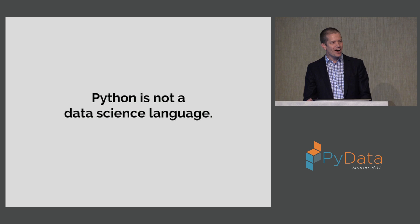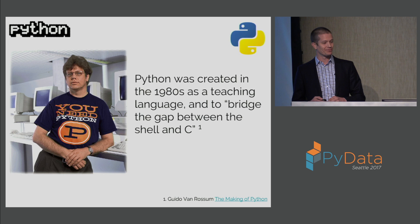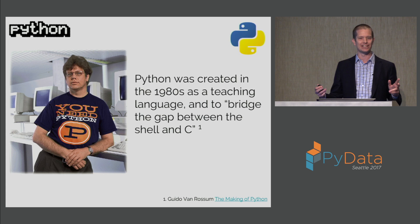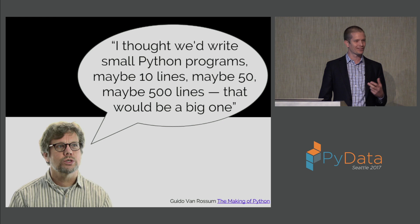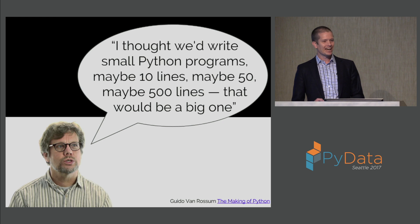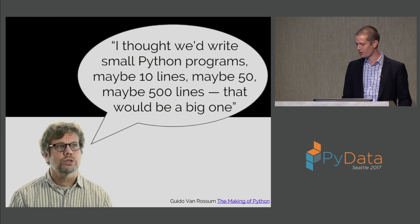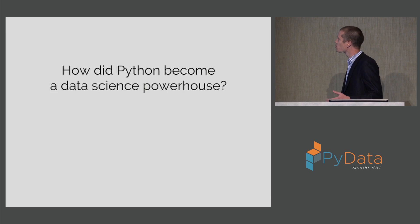One thing to realize as you go into the history of PyData is Python is not a data science language. If you look at where Python came from, it was created by Guido van Rossum in the 80s, basically as a teaching language — he wanted a good language to teach undergrads, and also to bridge the gap between the shell and C. He thought we'd be writing maybe a dozen or a few dozen line scripts, and these days there are applications with thousands or hundreds of thousands of lines. Instagram runs on Python. It's amazing where Python has come given that it wasn't really designed to do any of that.